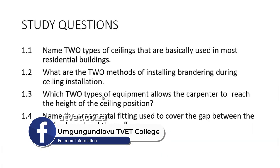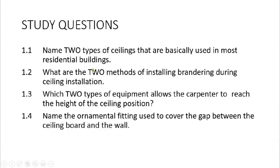Study questions: number one, name two types of ceilings used in most residential buildings. Number two, what are the two methods of installing brandering during ceiling installation? Number three, which two types of equipment allow the carpenter to reach ceiling height? Number four, name the ornamental fitting used to cover the gap between the ceiling board and the wall. Thank you and stay safe.